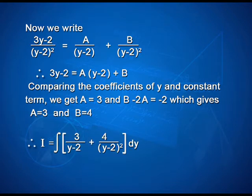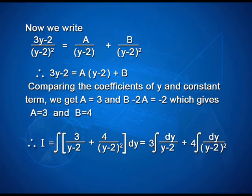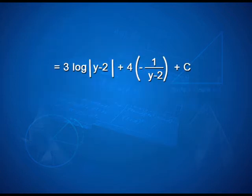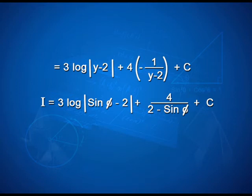Therefore, I = ∫[3/(y-2) + 4/(y-2)²] dy = 3 log|y-2| + 4·(-1/(y-2)) + C. Substituting back, I = 3 log|sinφ - 2| + 4/(2 - sinφ) + C.